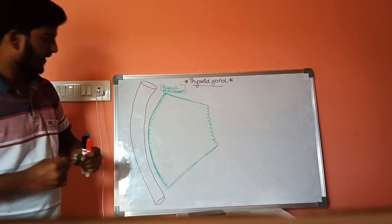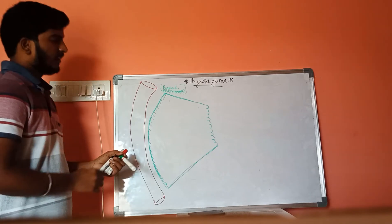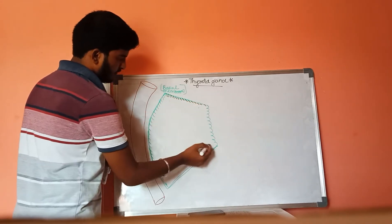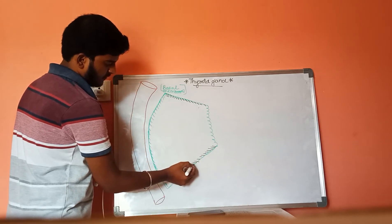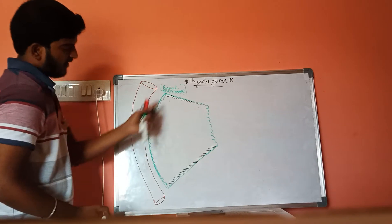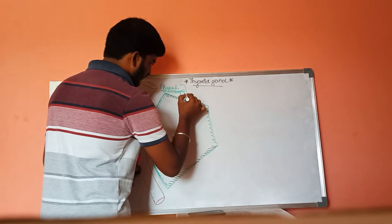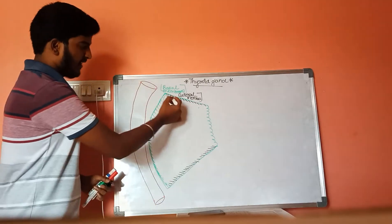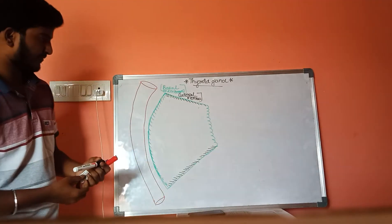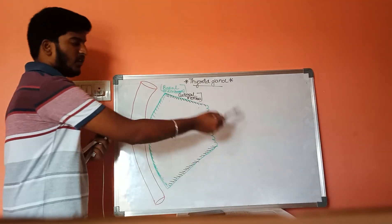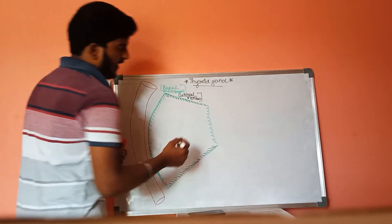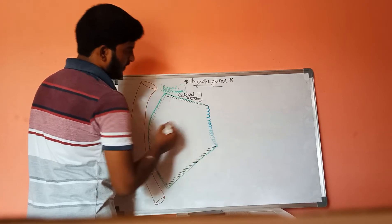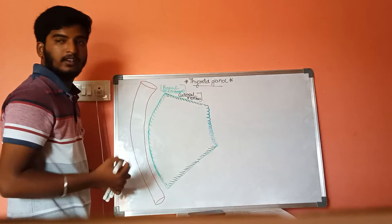There are three different types of membranes in the thyrocytes. The membrane facing towards the circulatory system is called the basal membrane. The membranes present at the sides are called lateral membranes. And the membrane present towards the lumen side is called the apical membrane or luminal membrane.